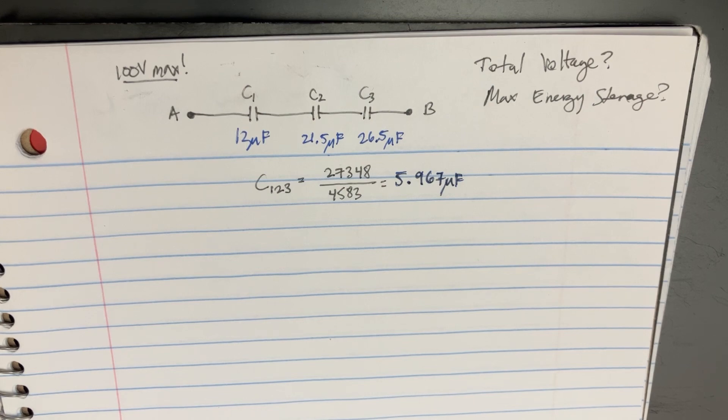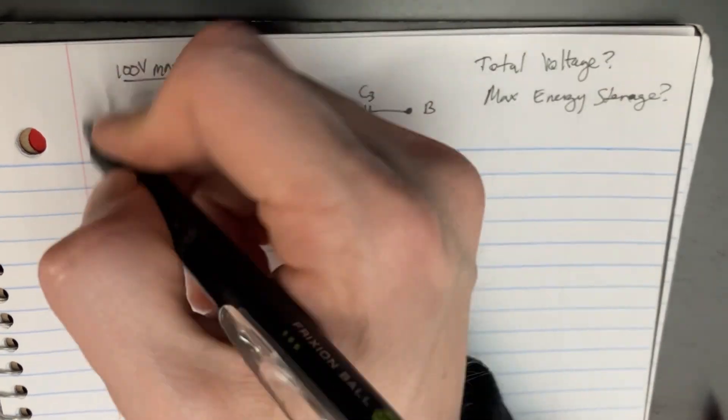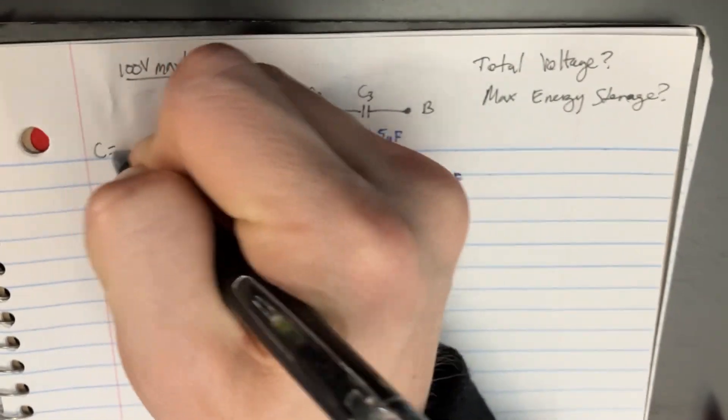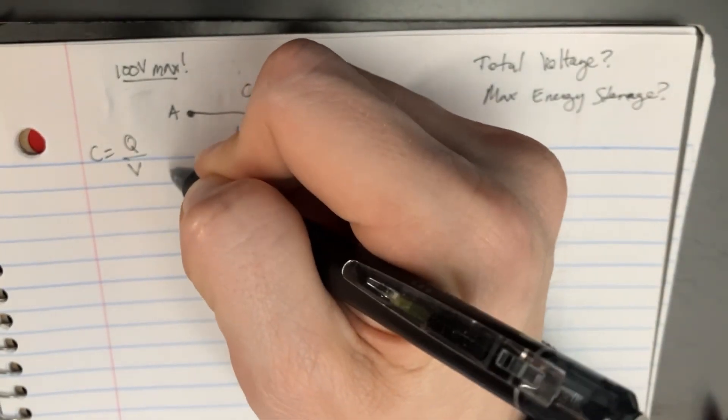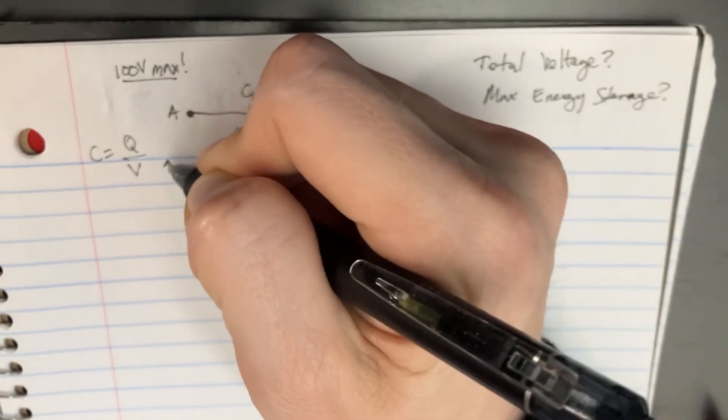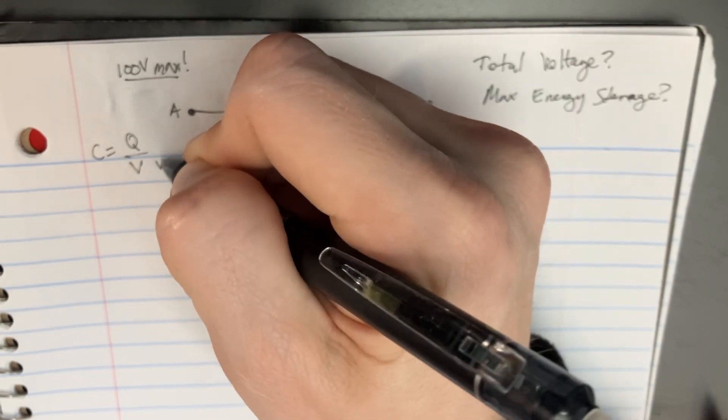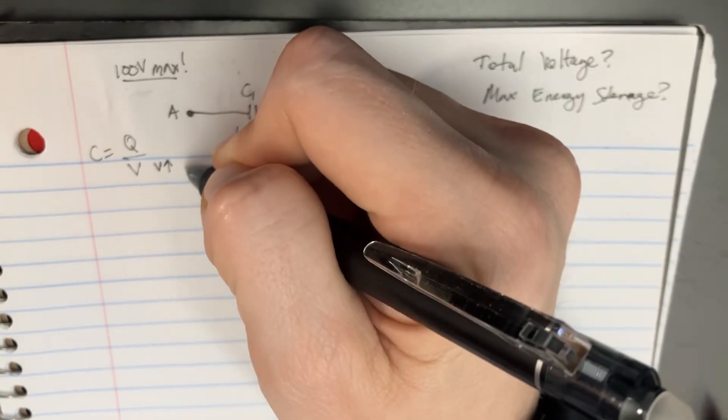That's going to come in handy later. But we also know something very important. First, let's take a look at C equals Q over V. And we'll realize that if the voltage increases, then if V increases, then C is going to decrease.